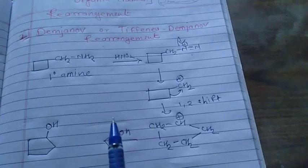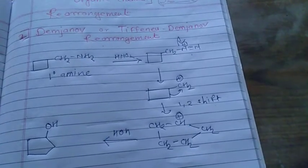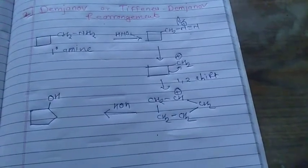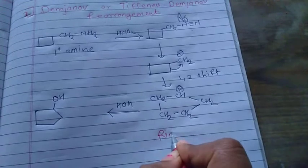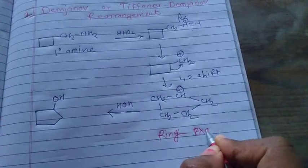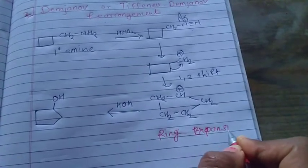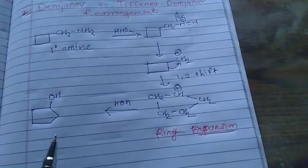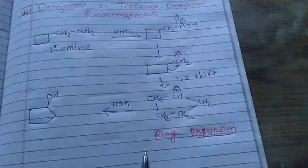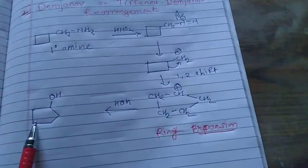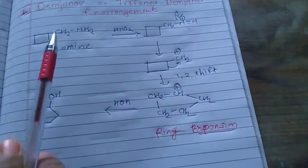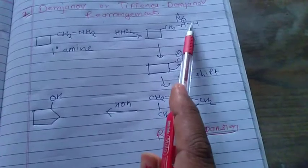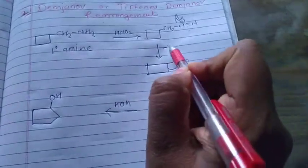This reaction undergoes ring expansion. The most important thing is that the Demyanov rearrangement is mostly useful for the ring expansion reaction. This is the mechanism: first of all, the primary amine reacts with HNO2, there is a formation of the diazonium compound, then by removing nitrogen, there is a formation of the carbocation.